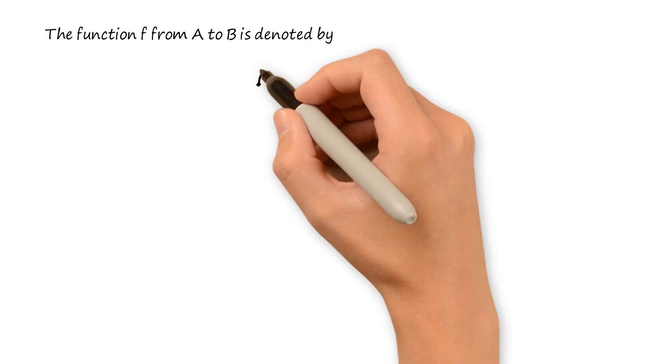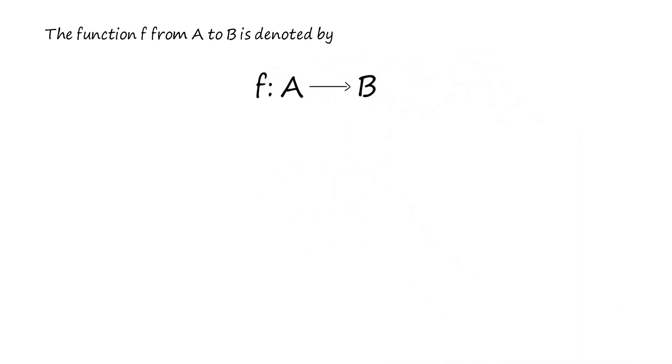The function from an input set A to an output set B is denoted like this. Here, A is the domain of the function and B is the codomain of the function.